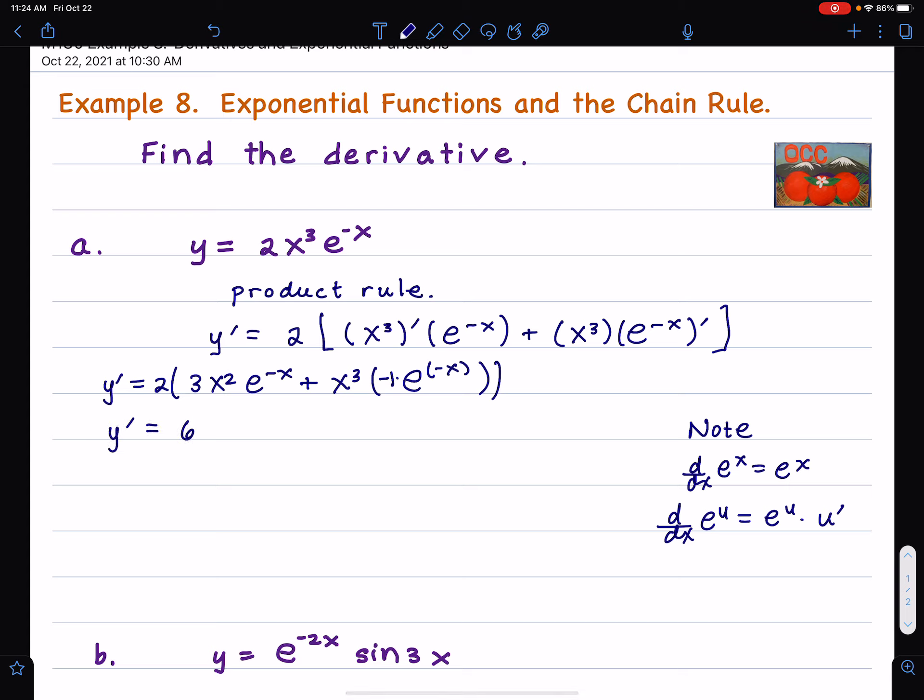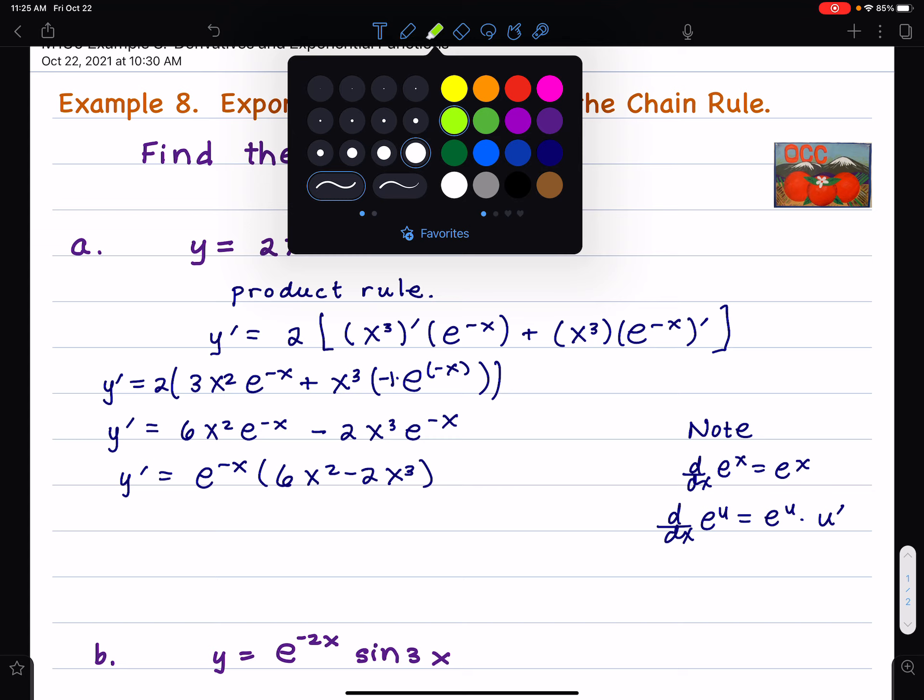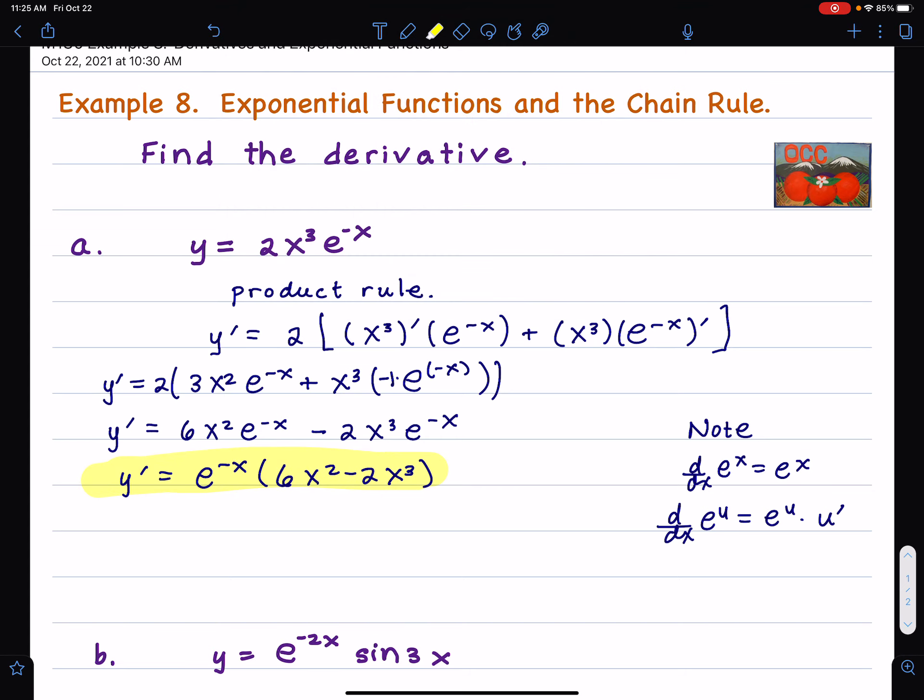Then I can multiply everything out. 2 times 3 is 6x squared e to the negative x. Then I have 2 times x cubed times negative 1 - minus 2x cubed e to the negative x. I think it would look better if I factored out just the exponential function. So I have an exponent times a polynomial. That's just entirely a question of style, if you like it that way.